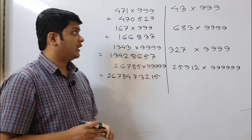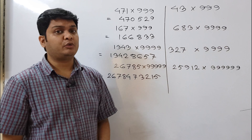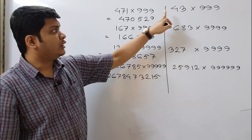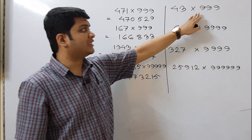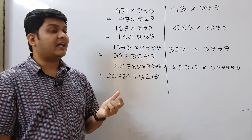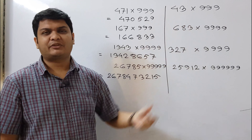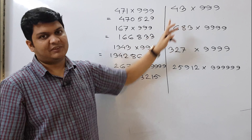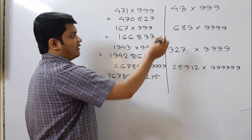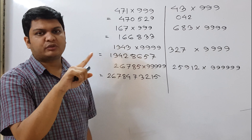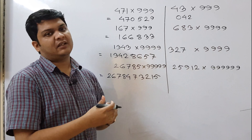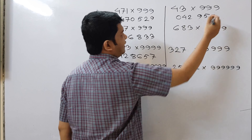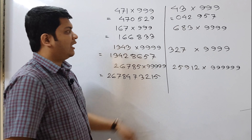Now Case 2: when the multiplicand has fewer digits than the multiplier. The process is exactly the same with one modification — pad the multiplicand with a leading zero to match the number of digits. For example, 43 × 999: treat 43 as 043, write 042, then subtract from 999 — 9 minus 0 is 9, 9 minus 4 is 5, 9 minus 2 is 7. Result: 042 | 957.